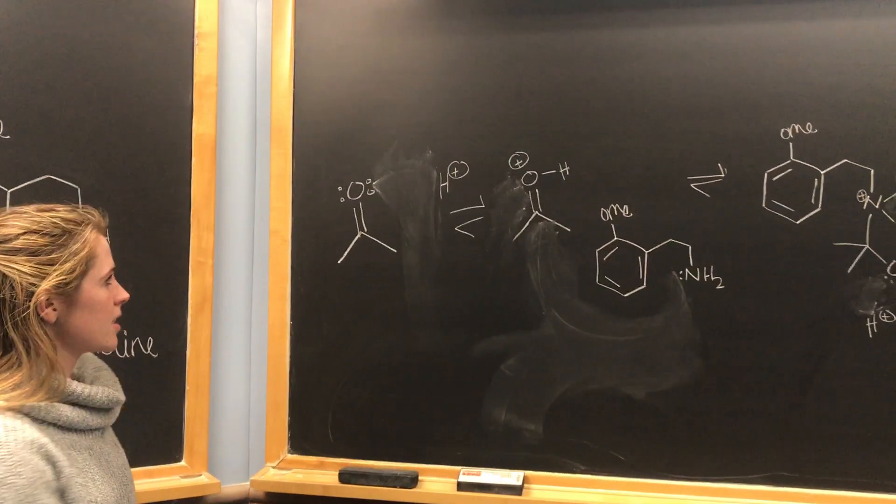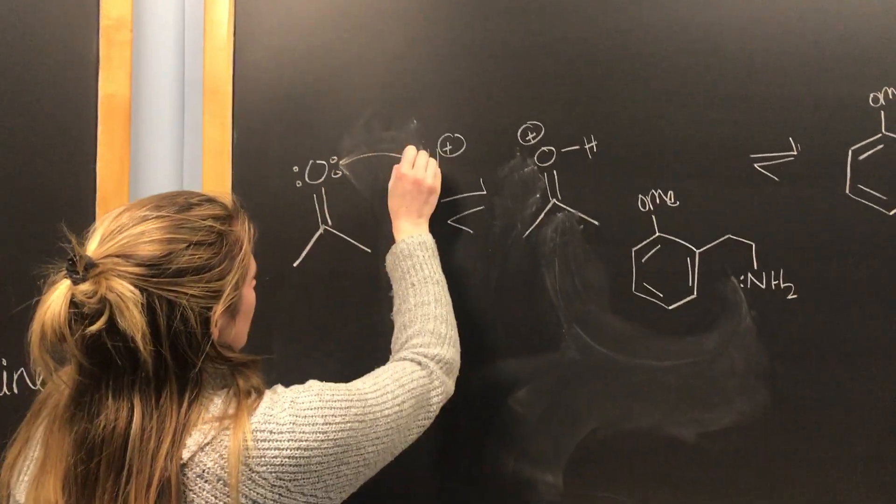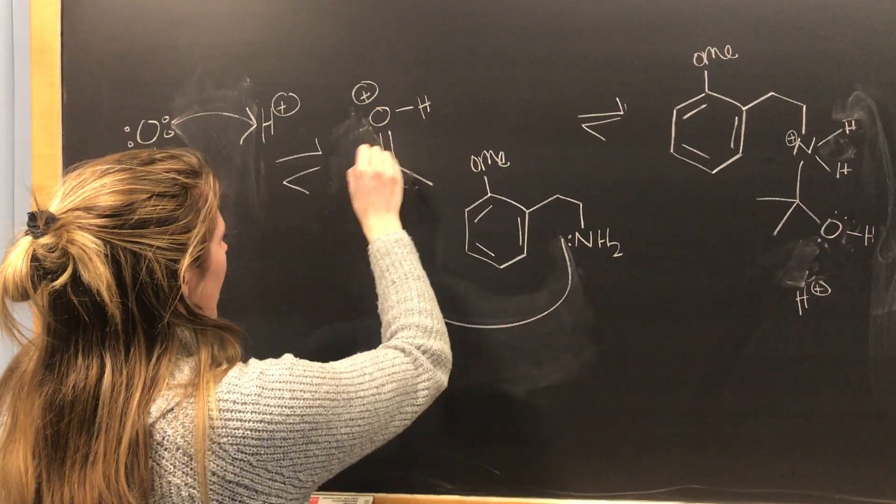What the mechanism looks like is you start with your carbonyl, so in my case the ketone gets protonated to make it a good electrophile for this nitrogen to come in and attack.